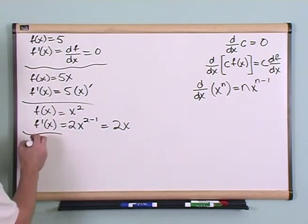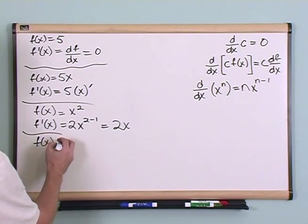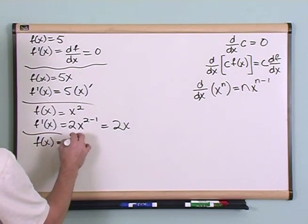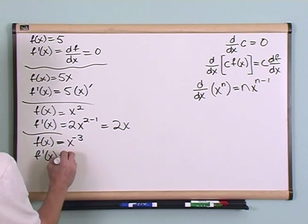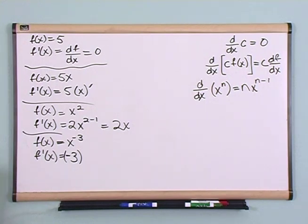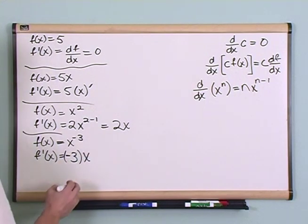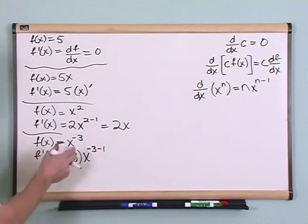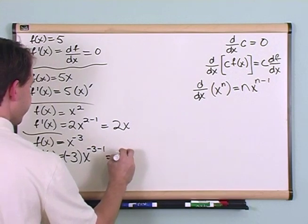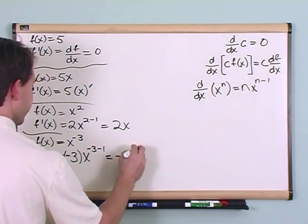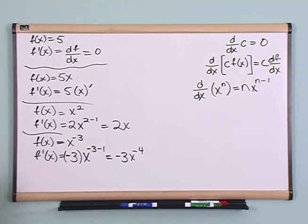Another one, just to practice it, if you have f of x equals x to the minus three, then how would you take the derivative? f prime of x equals, take the exponent, in this case negative three, and I'm going to put parentheses around it just to be clear it's negative three, times x to the negative three minus one. It's the same formula, negative three, you subtract one off. So you'll get negative three x to the negative four. Easy, easy, easy, right?